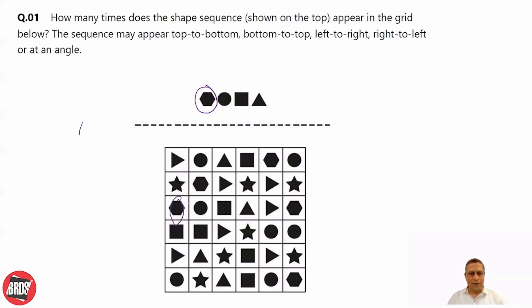Then again we will move further here. Hexagon, circle, square, triangle - yes, we have one more.